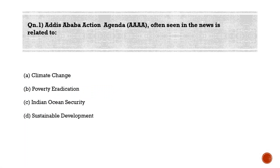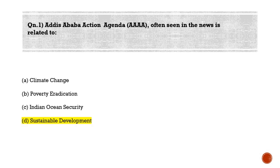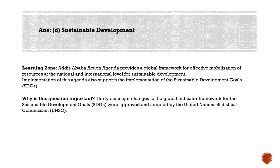First question for the day: the Addis Ababa Action Agenda, often seen in the news, is related to — option A: climate change, option B: poverty eradication, option C: international security, option D: sustainable development. The correct answer here is option D, sustainable development.